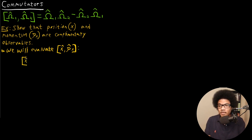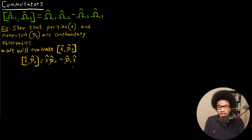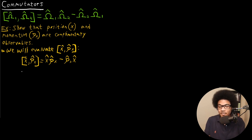To do that, we know that this commutator is going to be equal to the outcome of applying the momentum operator first, minus the outcome of applying the position operator first. The position operator is just multiplying by x, and the momentum operator is H-bar over i times the first derivative with respect to x.